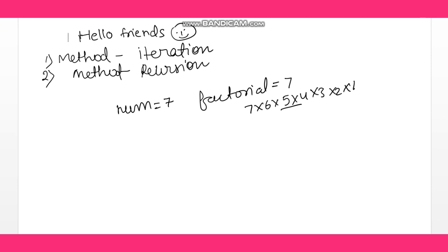In the program, we will take a variable called number, set to 7. We will first check whether the number is less than, greater than, or equal to zero, so we can determine if we can find the factorial or not.